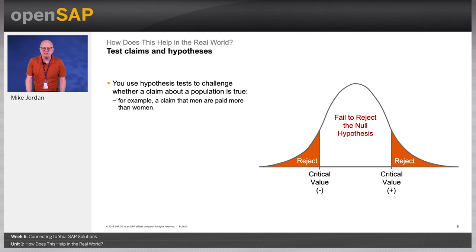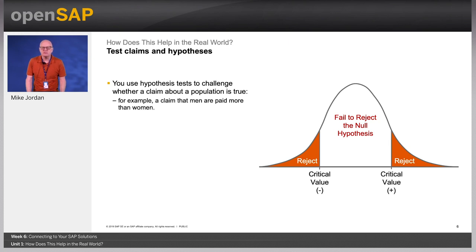You use hypothesis testing to challenge whether a claim about a population is true. For example, a claim that men are paid more than women. To test a statistical hypothesis, you take a sample, collect data, form a statistic, standardize it to form a test statistic, and decide whether the test statistic refutes the claim.